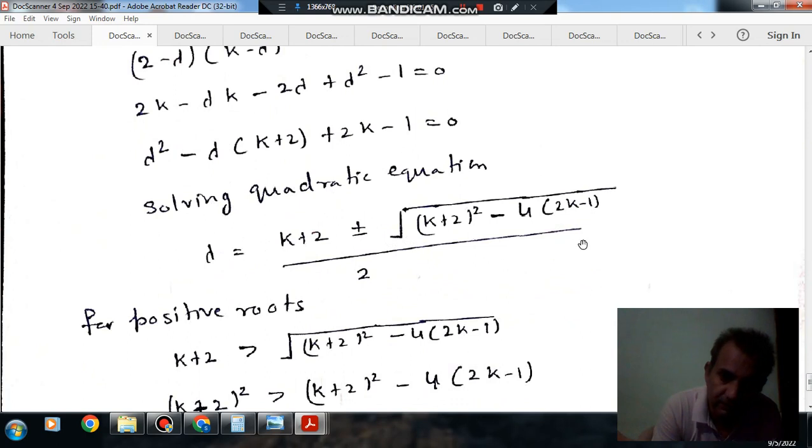For positive roots, there will be two roots: K + 2 plus this term, and K + 2 minus this term. K + 2 plus this term will always be positive, so K + 2 minus this term should be positive.